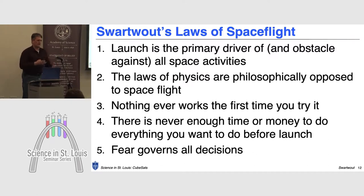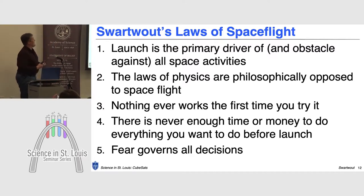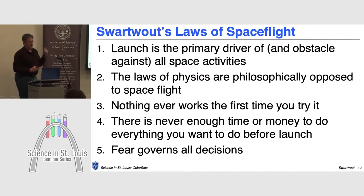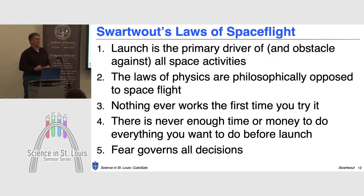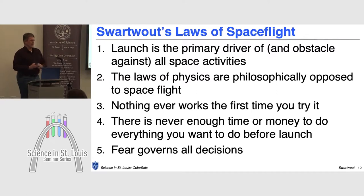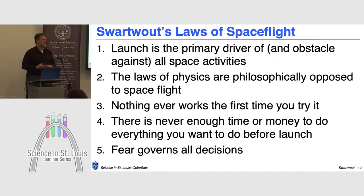I teach a couple of courses in orbits and spacecraft design, so I have five rules of thumb — my laws of spaceflight. The first: you cannot overestimate how much launch dominates or messes up everything else. Launch is the driver or obstacle against space activities. The second law: the laws of physics are philosophically opposed to spaceflight. In order to get into orbit, we need to speed up by 18,000 miles per hour, and objects don't like to do that. It's very easy to burn them up, easy to crash. As one of the chief engineers of SpaceX said during rocket development: 'When we light that rocket, there are a thousand things that can happen, and only one of them is good.'